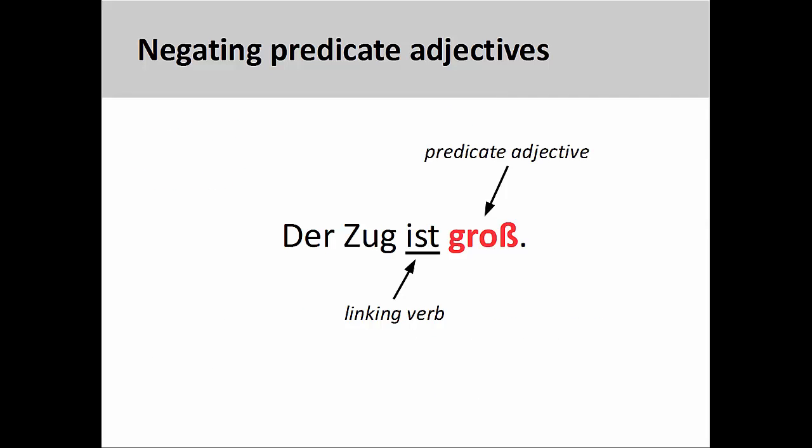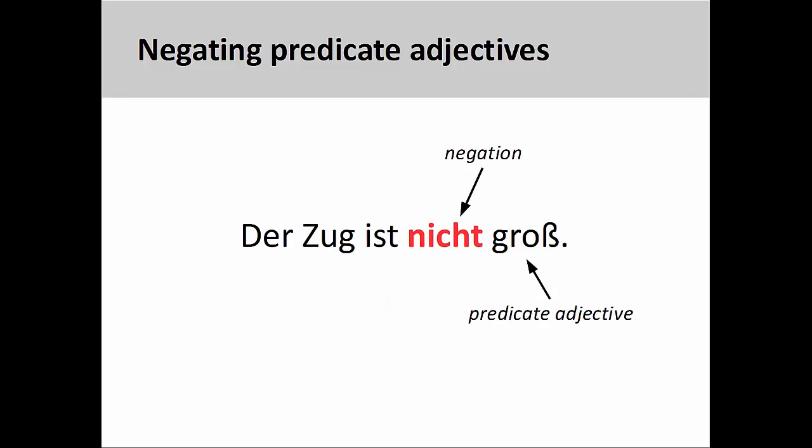In German, the adverb nicht can be used before adjectives and other adverbs to negate them. In the sentence you see here, der Zug ist groß — the train is large — the predicate adjective groß comes after the linking verb and describes a characteristic of the noun. To negate this adjective, we simply need to insert nicht before it: der Zug ist nicht groß — the train is not large.